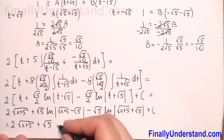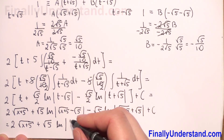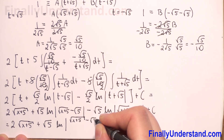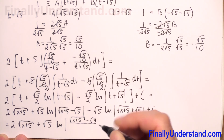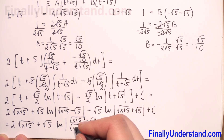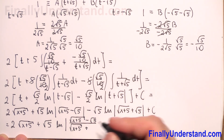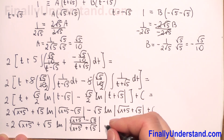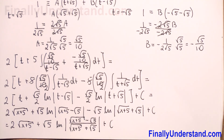We can factorize square root of 5 and use the property of logarithms. The final result is square root of 5 times the natural logarithm of the absolute value of (square root of x plus 5 minus square root of 5) over (square root of x plus 5 plus square root of 5), plus constant C. This is the solution.